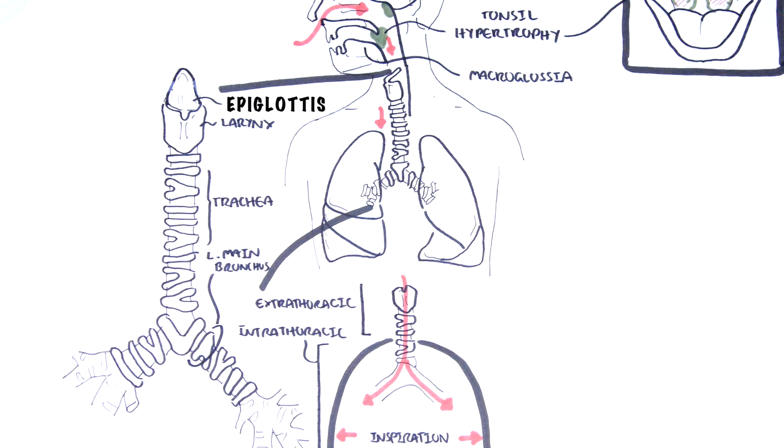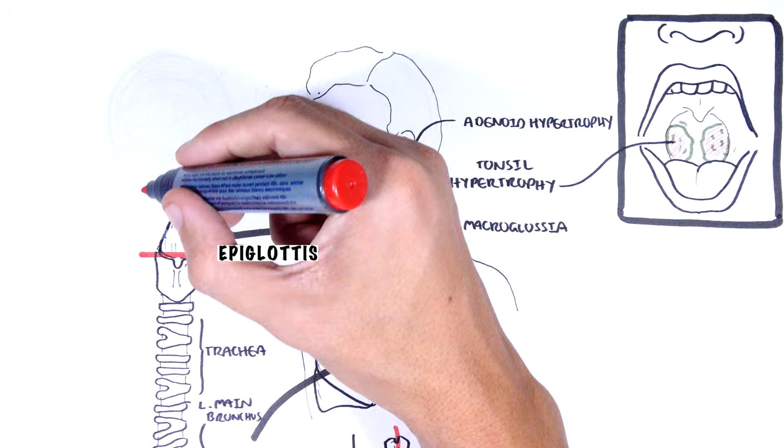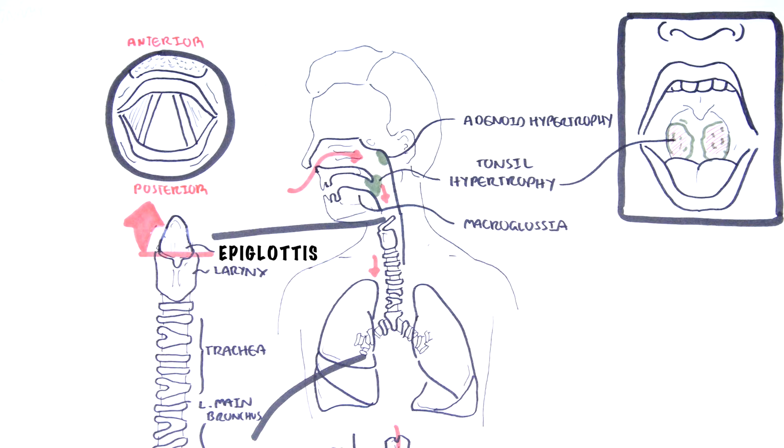The trachea bifurcates into the right and left main bronchus. We are looking at the lower respiratory tract from an anterior view. Now let us cut a cross section of the larynx and look at it from a superior view from the top. To orientate ourselves, this is the anterior region of the cross section and here is the posterior area.